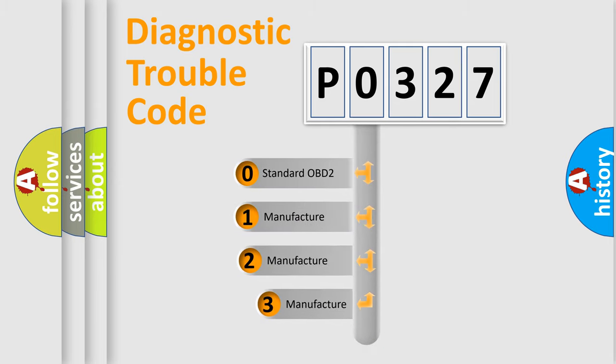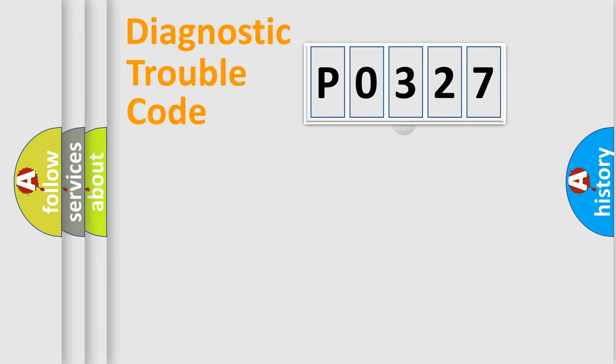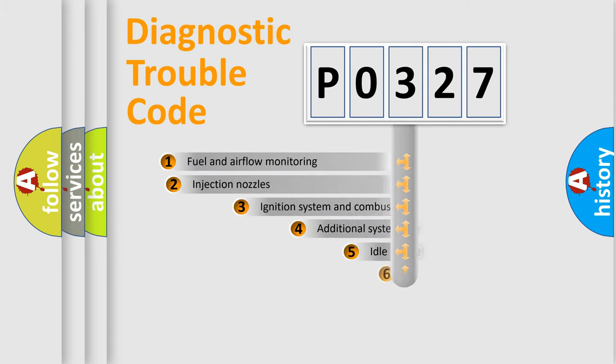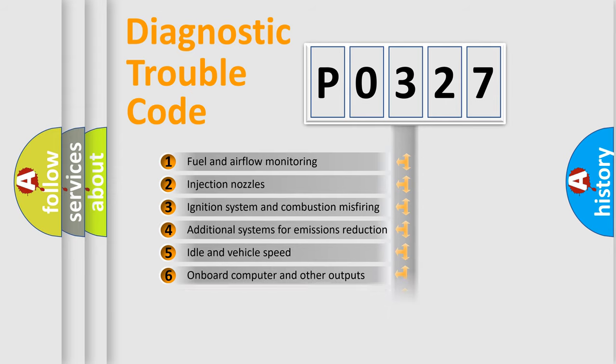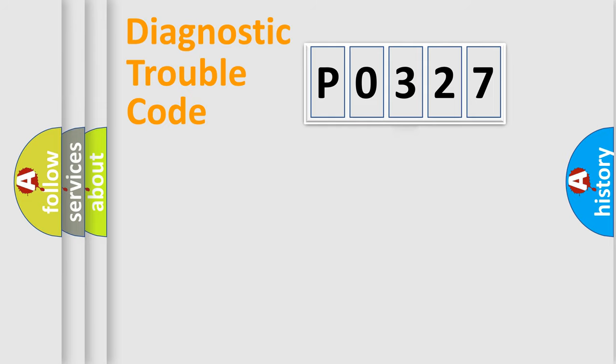If the second character is zero, it is a standardized error. In the case of numbers 1, 2, or 3, it is a manufacturer-specific error. The third character specifies a subset of errors. The distribution shown is valid only for the standardized DTC code.